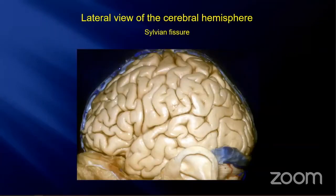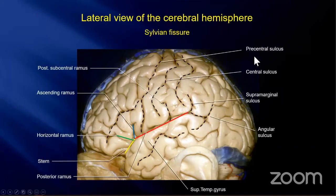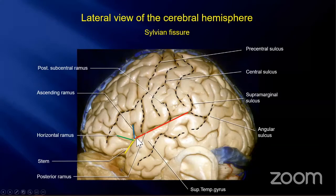This is a lateral view of the left cerebral hemisphere. The sylvian fissure has four major rami: the stem, horizontal ramus, ascending ramus, and posterior ramus.